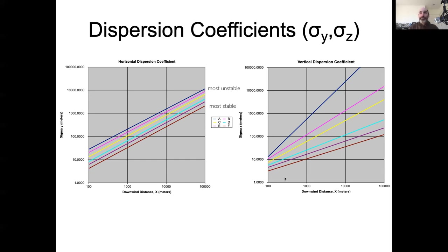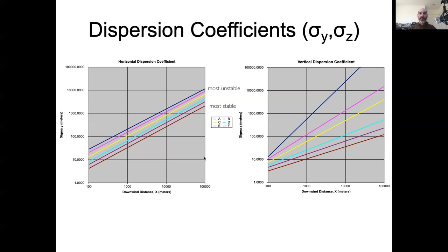We contrast that with the vertical dispersion where the things fall out in the same order — you have more vertical dispersion under unstable conditions and less vertical dispersion under stable conditions. But those slopes are increasing, so as the atmosphere becomes more unstable, we get a predominantly vertically mixing situation. When the atmosphere is very stable, we get a predominantly horizontal mixing situation. At a short distance downwind, most of what we're seeing is horizontal diffusion — the diffusion for all classes tends to be higher in the horizontal. For the most stable class F, that horizontal dispersion is always bigger than the vertical dispersion.